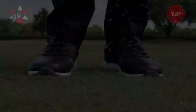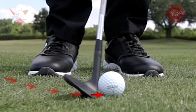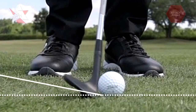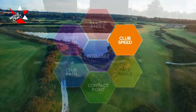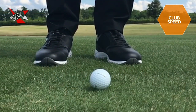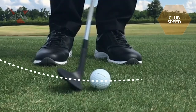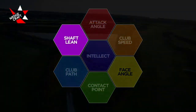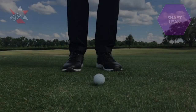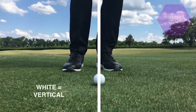Here we see attack angle — the downward movement of the red arrows indicates the attack angle, or how much the club is descending when it hits the ball. The next example is club speed: how fast the club is moving at impact. Typically it's the velocity of the point of contact on the club face that's critical here.